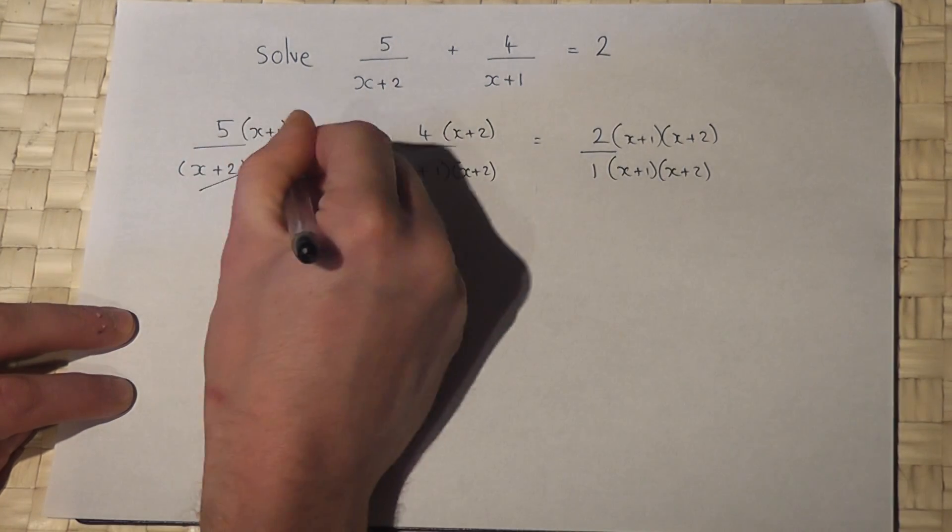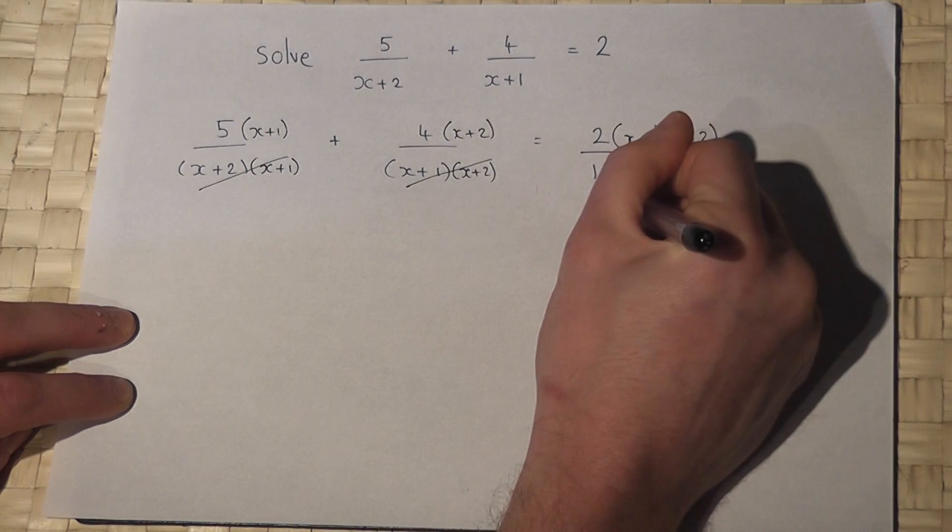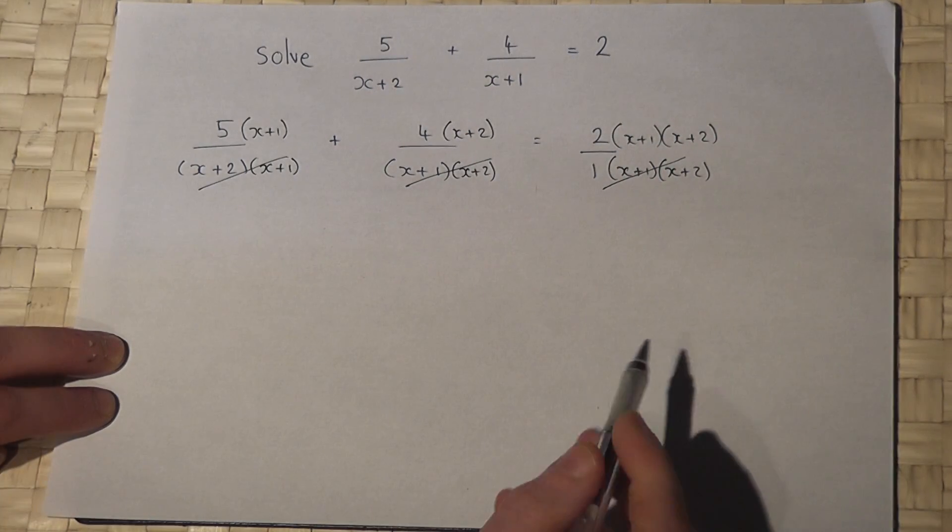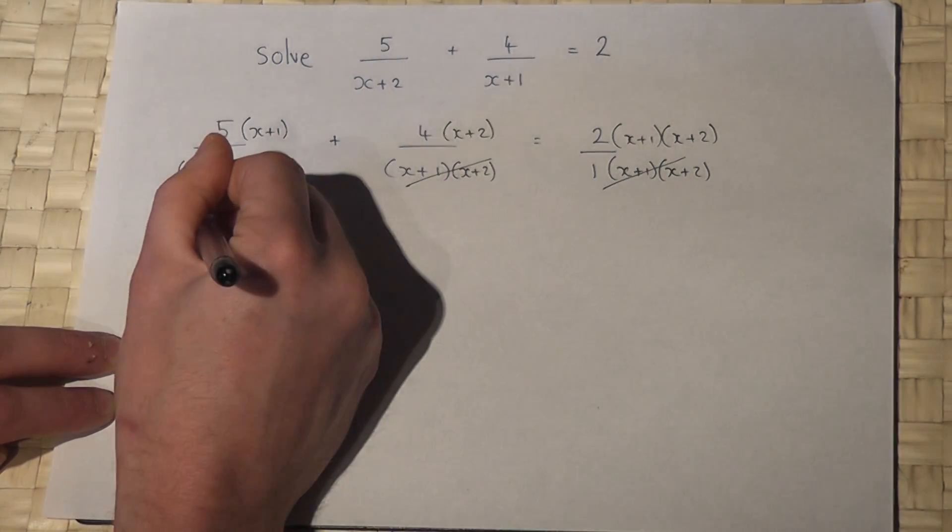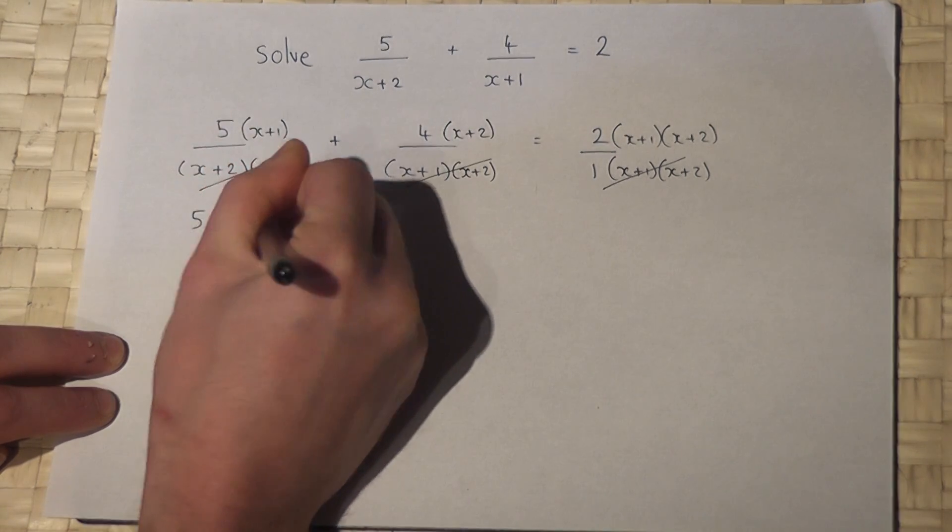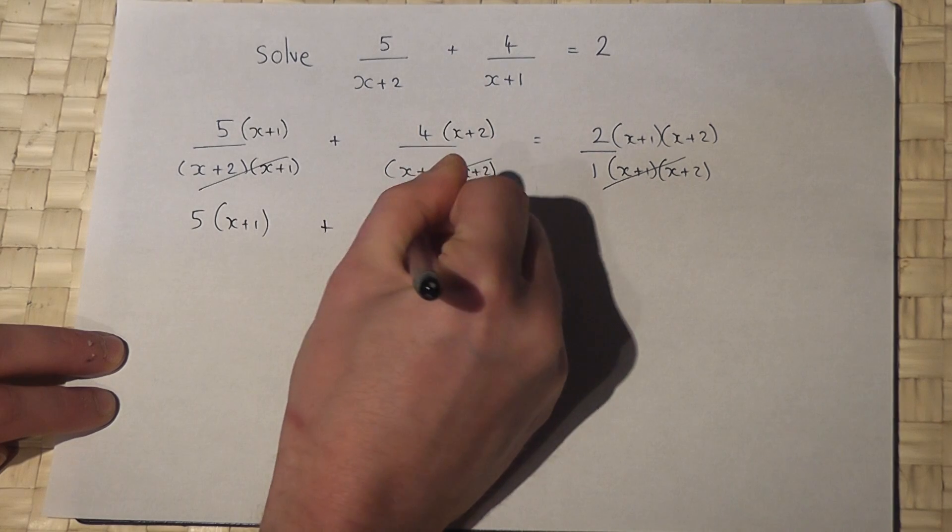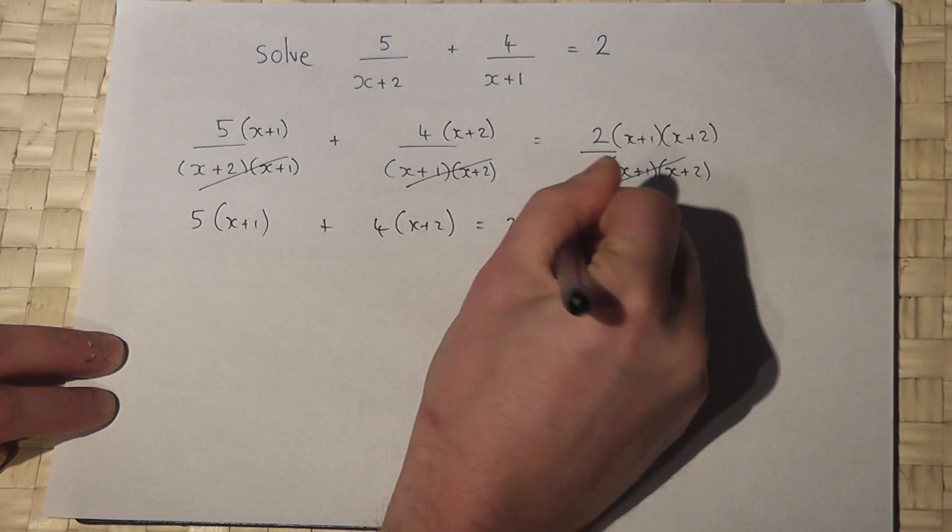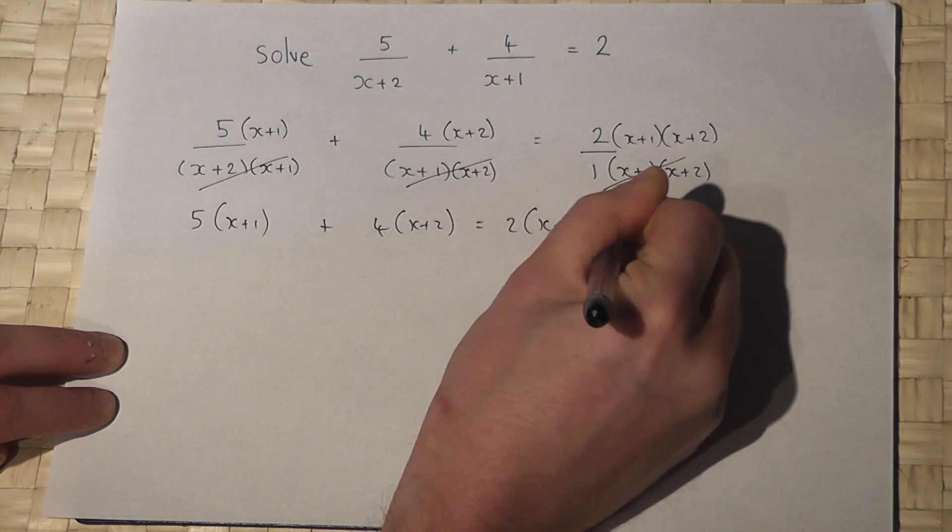So I can now cancel it off, like so. And this then leaves me an equation as follows: 5(x+1) plus 4(x+2) equals 2 lots of (x+1) times (x+2).